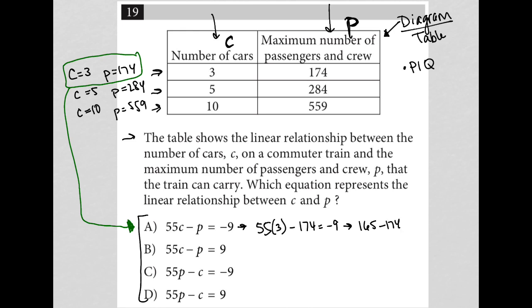165 minus 174 is, in fact, negative 9. So negative 9 equals negative 9, and that makes choice A correct. There's really no other option, no real need to even try any of the other ones.